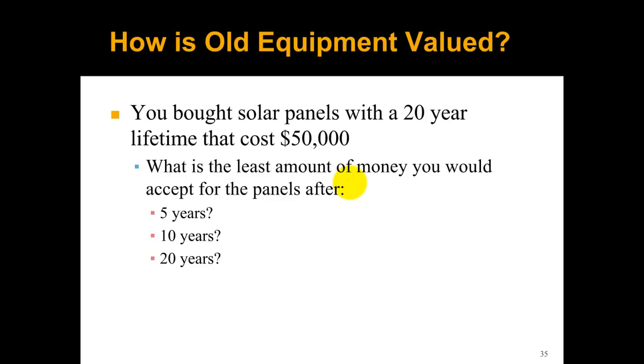The other thing we want to deal with in our cash flow is if we have a relatively short study period and we have equipment that lasts longer. Let's think about solar panels with a 20-year lifetime that cost $50,000. What would you think is the least amount of money you would accept for the panels after 5 years, 10 years, and 20 years? Just come up with a number on your own for each of these and think about how you might go about calculating this.